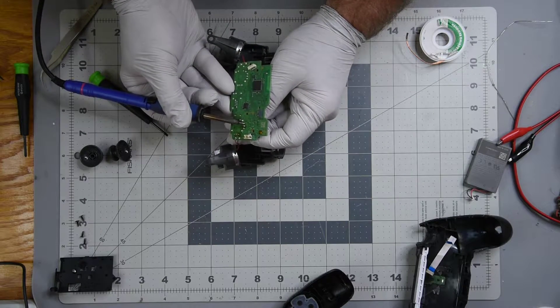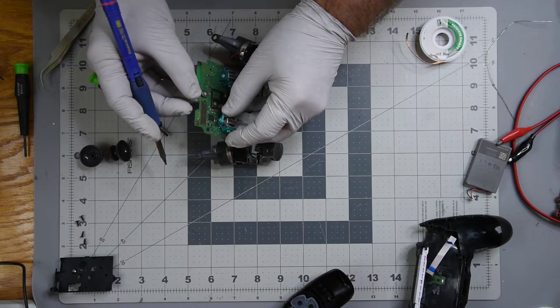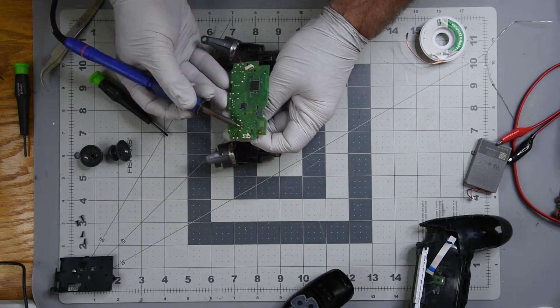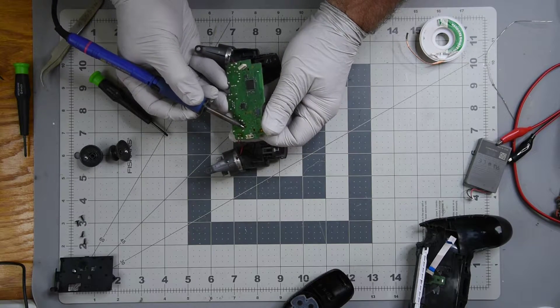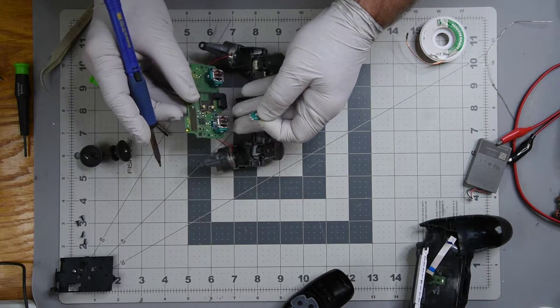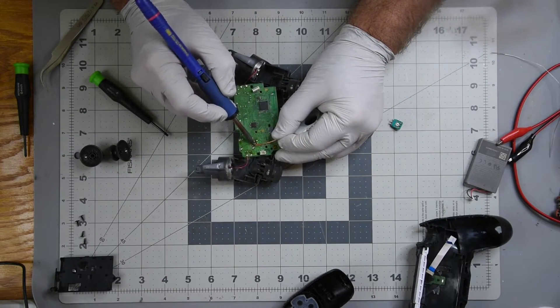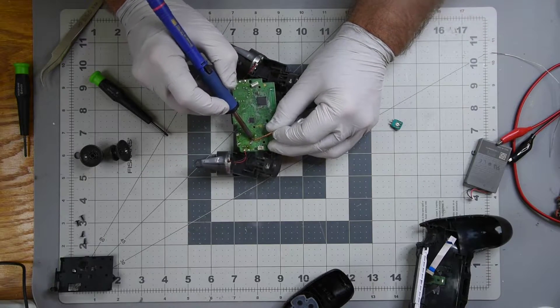Now to remove the potentiometers, each one just clips into the joystick with two tabs. So just pop them away from the joystick so they are clear of the shaft that goes into them. Each one has three leads, so by pulling gently on the potentiometer while melting the solder on the leads, it can be removed. Then use the solder wick to remove the solder from the three holes. Then repeat this for the second potentiometer on the joystick.